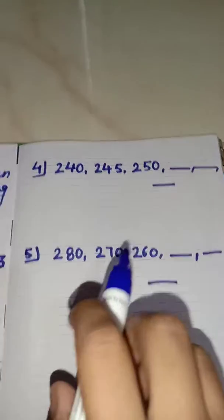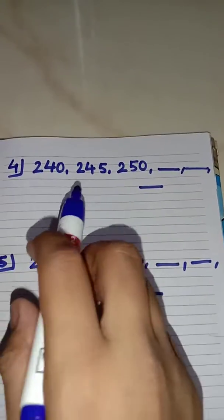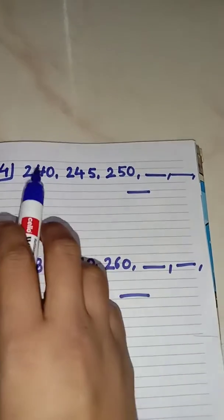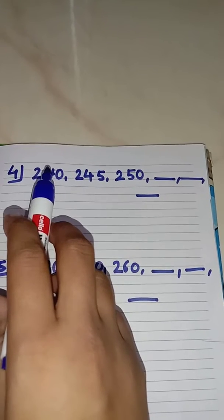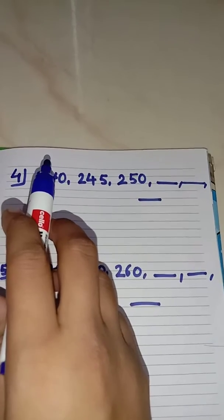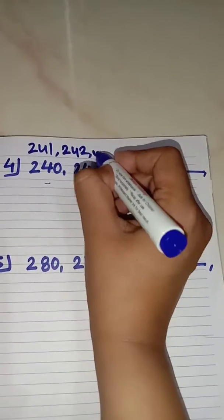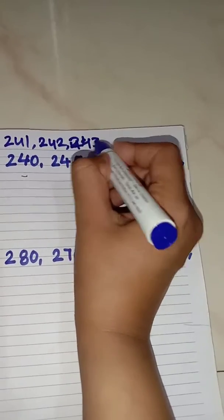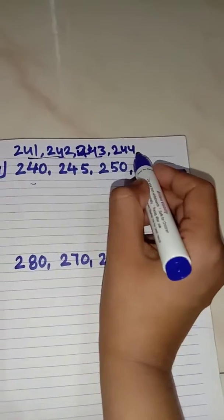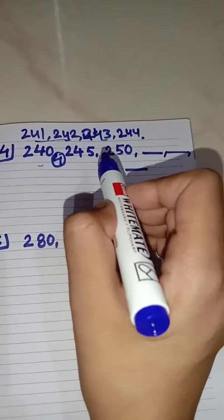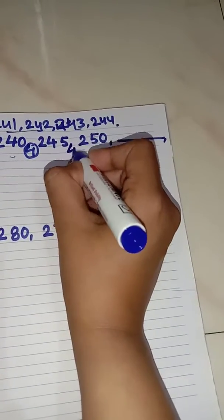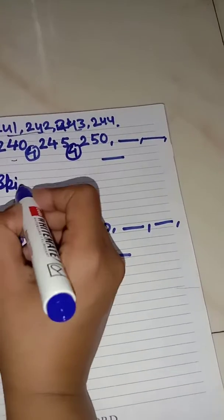Now look at the next question. Students, find out yourself what we are doing: 240, 245, 250. After 240 comes 241, 242, 243, and 244 — so how many numbers are we skipping? Again 4 numbers we are skipping. So we have written next number 245. Then look at 245: what comes after 245? 246, 247, 248, 249 — then we have written the next number. So again we are skipping 4 numbers. Then comes 255.